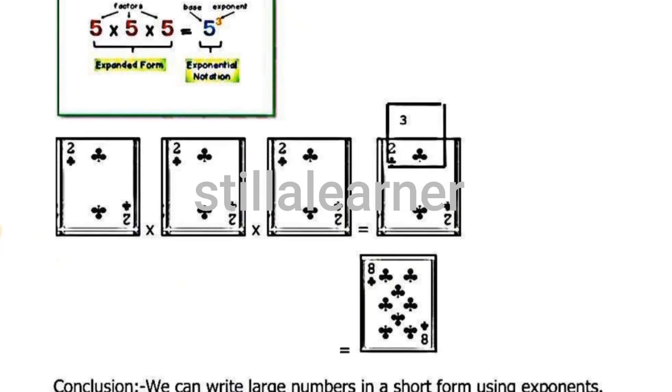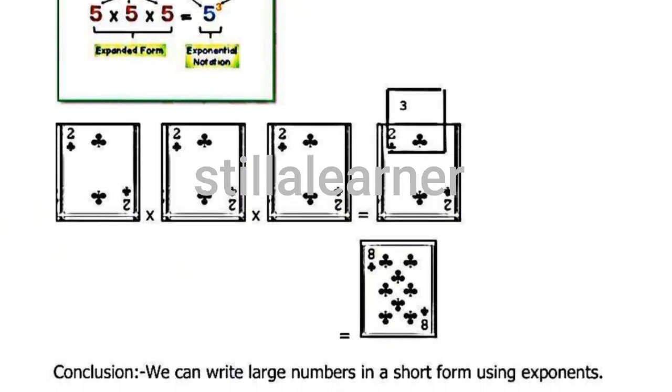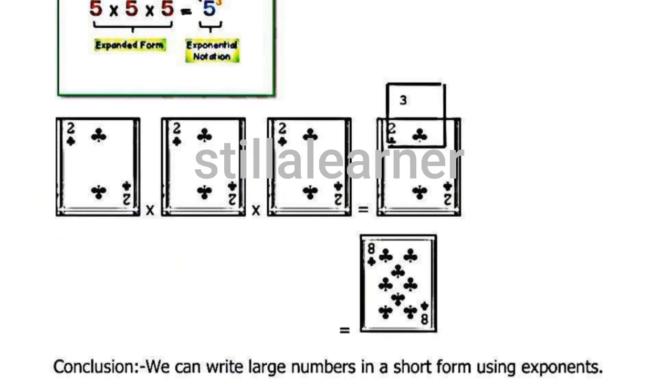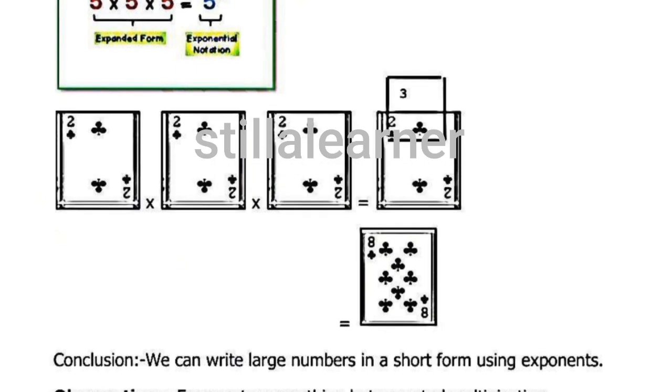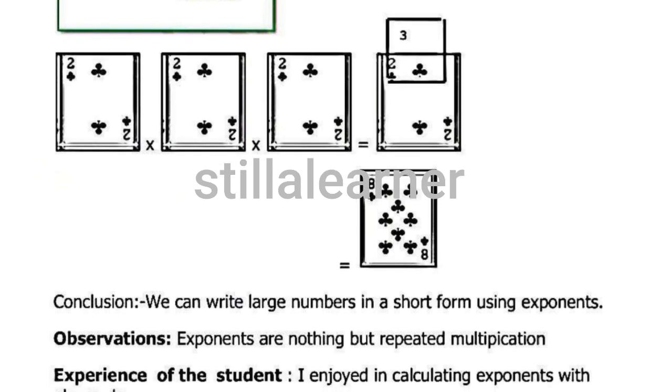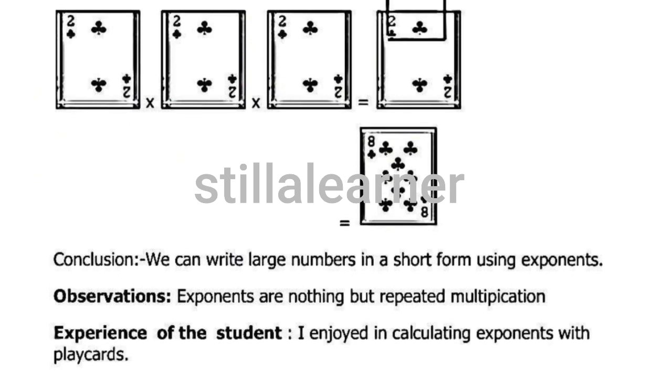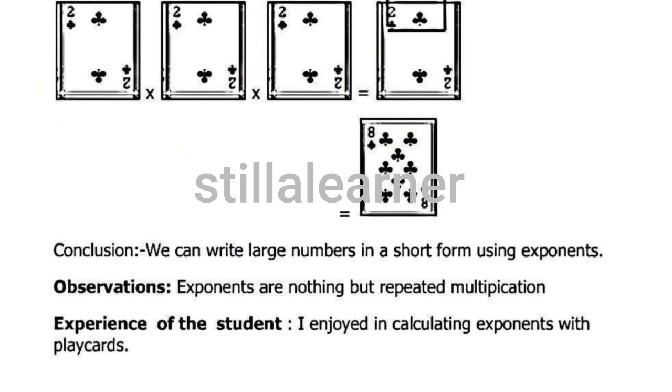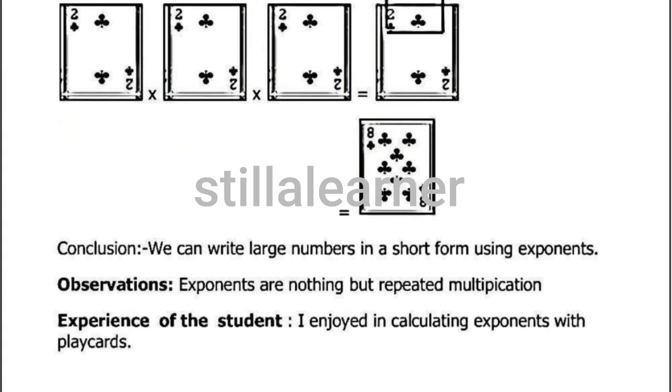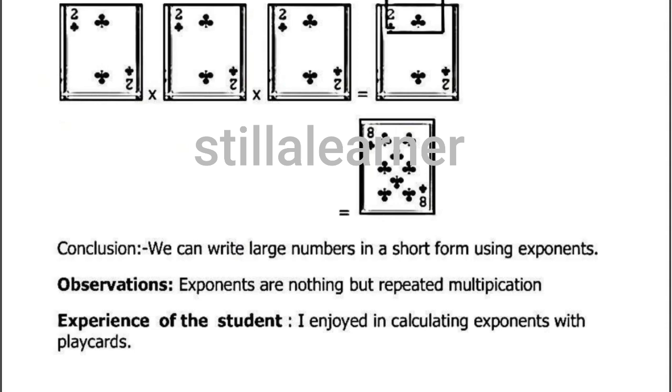And then at last you have to write down the conclusion, that is: we can write large numbers in a short form using exponents. Then observation: exponents are nothing but repeated multiplication. Exponents are nothing but repeated multiplications.